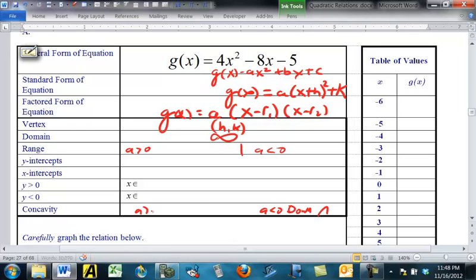And if A's positive, it's concave up. Looking like that. If it's concave up, the minimum is K, and then it goes up forever.